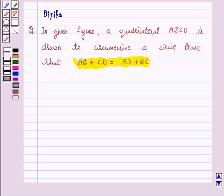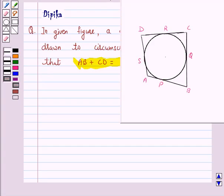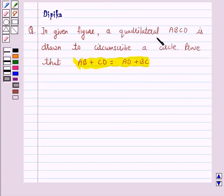Hello and welcome to the session. I am Deepika here. Let's discuss a question which says in given figure, a quadrilateral ABCD is drawn to circumscribe a circle. Prove that AB plus CD is equal to AD plus BC.